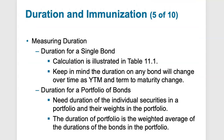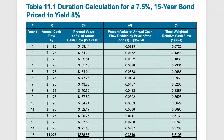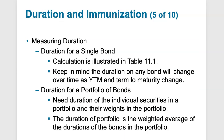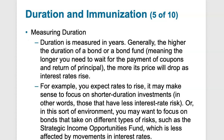Keep in mind that a bond's duration changes over time as yield to maturity and term are subject to change. You can also calculate duration for an entire bond portfolio — the portfolio duration is a weighted average of the durations of the individual bonds held in that portfolio, weighted by their values.